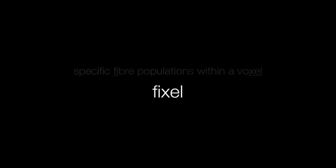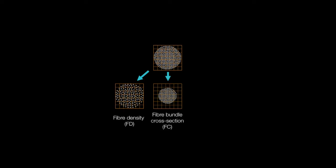With FIXEL-based analysis, we can estimate fibre pathway-specific changes that arise due to a change in axonal density or fibre density, due to a change in fibre-bundle cross-sectional area, or we can combine these metrics of fibre density and cross-section to come up with a combined metric which we call FDC. This enables us to most comprehensively analyse the total intraaxonal volume changes within a specific fibre pathway.